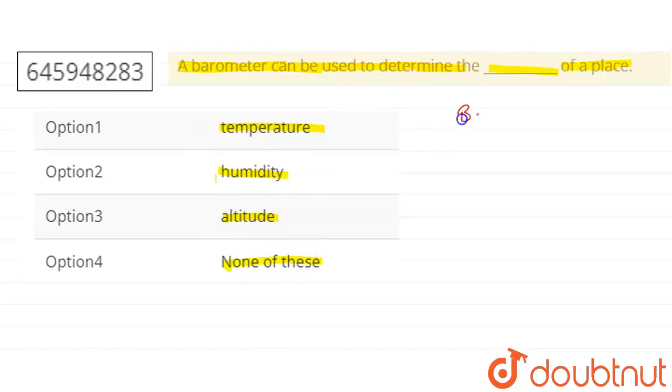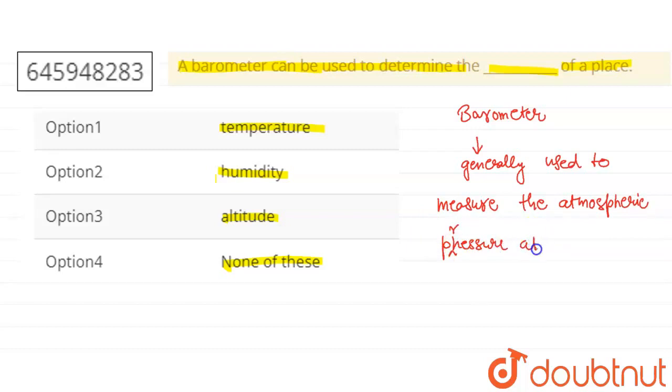A barometer is a device that is generally used to measure the atmospheric pressure at a place.